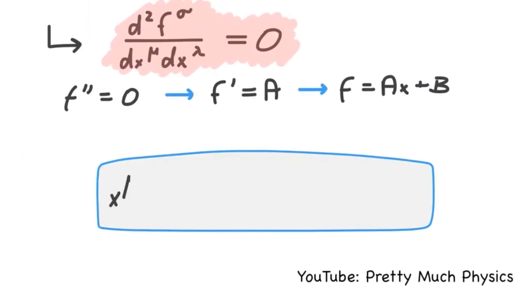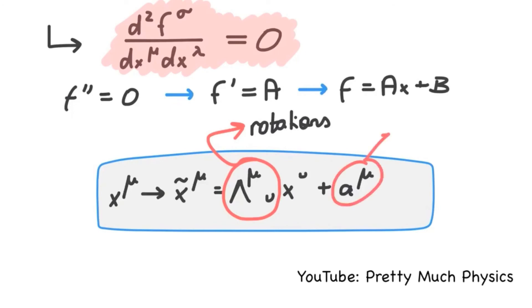Physics. The first constant is the uppercase Greek letter Lambda. Lambda describes rotations in space-time and A describes translations in time and space.